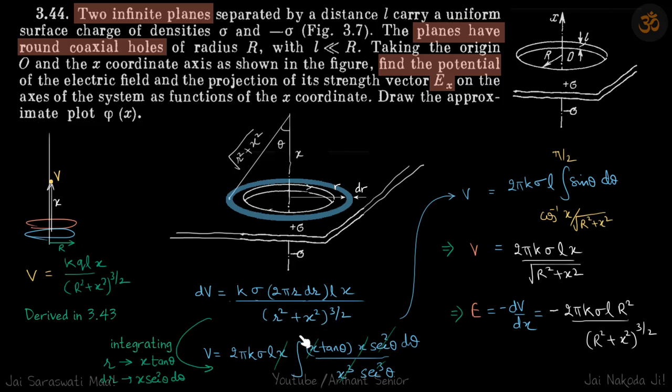To integrate this, we substitute r = x·tan(θ). When we integrate and apply the limits, θ varies from this point to infinity where θ becomes π/2.